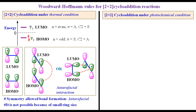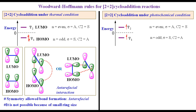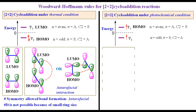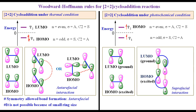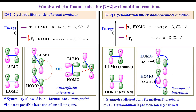Under photochemical conditions, one of the two pi electrons from ψ1 jumps to ψ2, making ψ2 the HOMO. The symmetry of the HOMO of the excited molecule and the LUMO of the ground state molecule are the same, so the allowed bonding interaction will be suprafacial. This allows the formation of the cyclobutane ring. So, 2+2 cycloaddition is photochemically allowed.